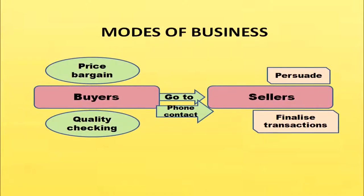Earlier, buyers went to the sellers and bargained for price. Buyers would check the quality of the product, and sellers would persuade buyers by offering discounts and claiming high quality. So many techniques were adopted by the sellers to persuade the buyers. After that, if the buyer was interested, the transaction would be finalized, sometimes through phone contact.